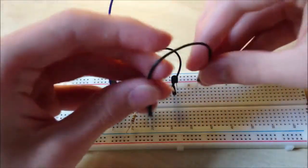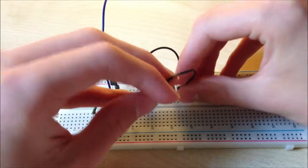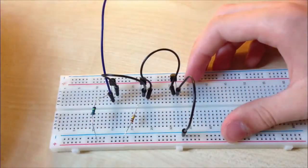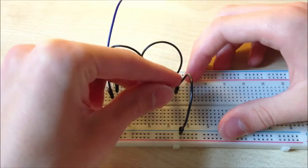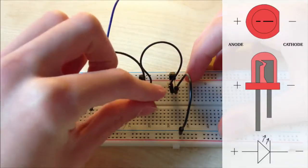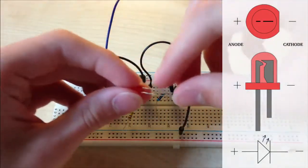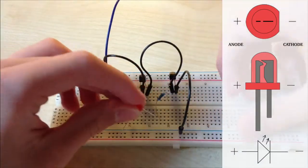Final step is connecting the emitter of the third transistor to ground, and connecting the LED with 100 ohm resistor to the positive rail. On the right side, you can see the diagram for the LED.